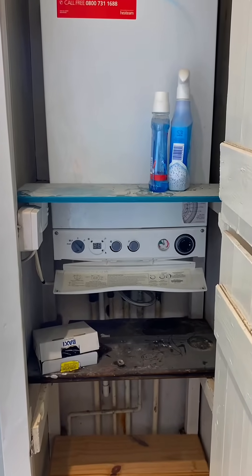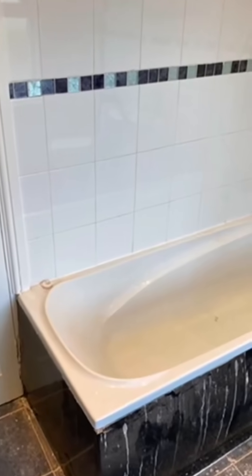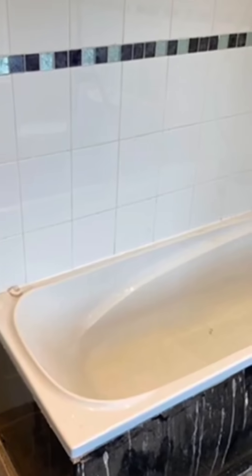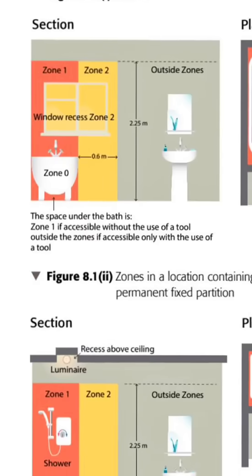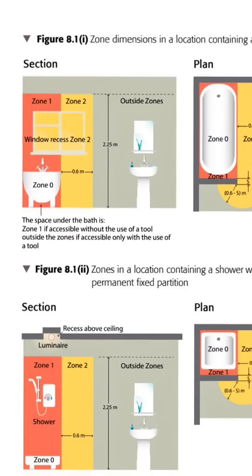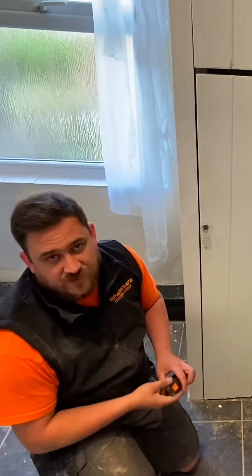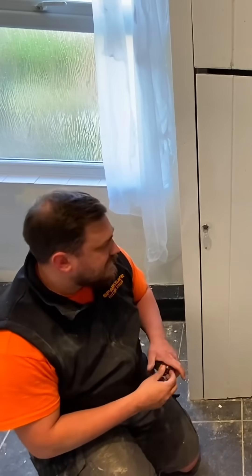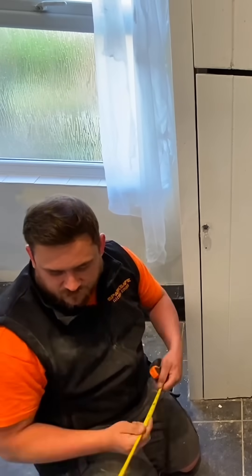Regarding airing cupboards — we do have a bathtub here. We're going to talk about what an airing cupboard means in relation to the zones of a bathroom. We have our airing cupboard here in our bathroom, and what we're going to do first is measure from the edge of the bathtub to see where, in relation to the zones, this airing cupboard falls.